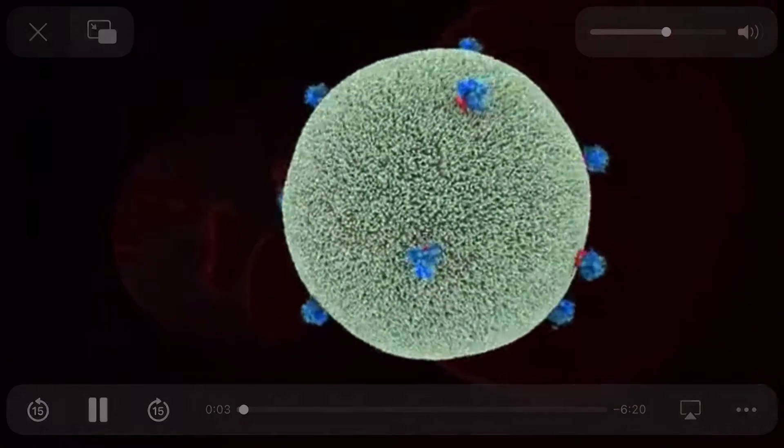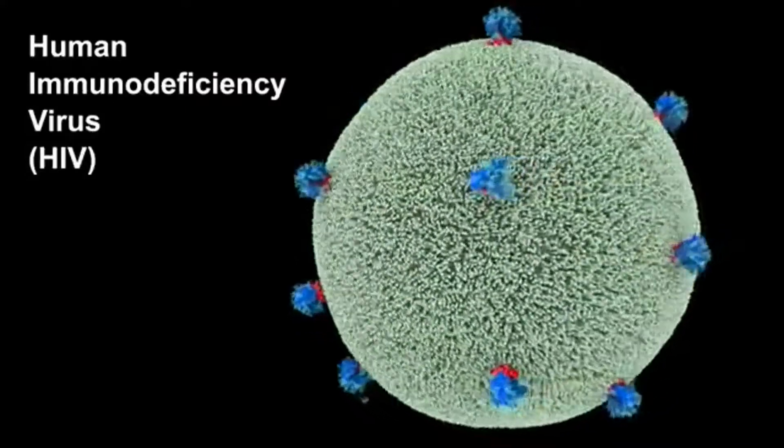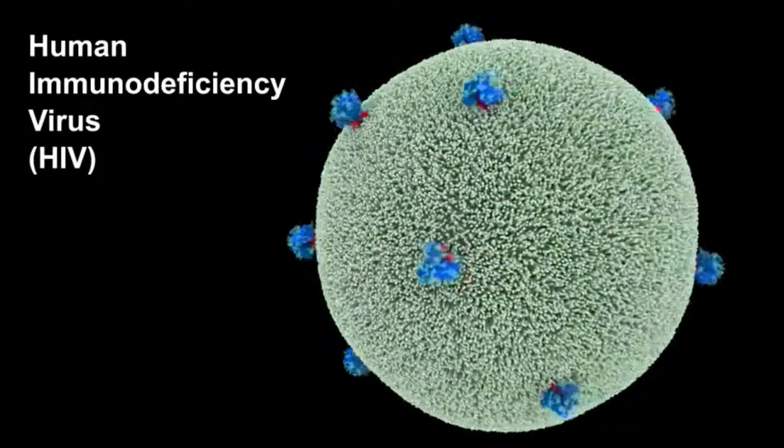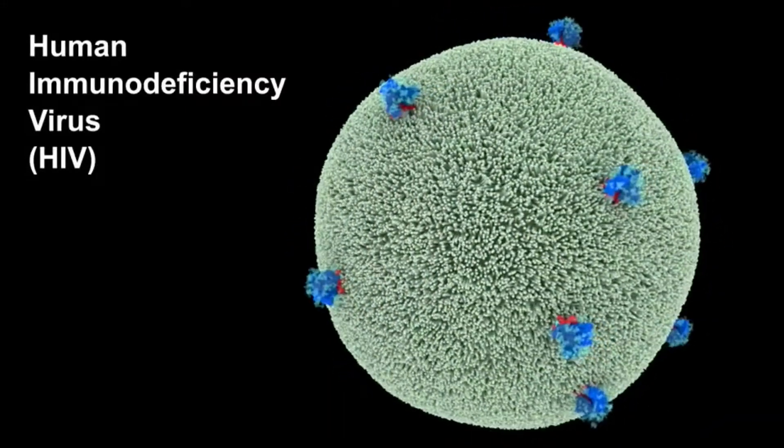HIV first enters the body through the bloodstream. The viral particle is surrounded by a membrane that's studded with viral proteins known as envelope proteins.